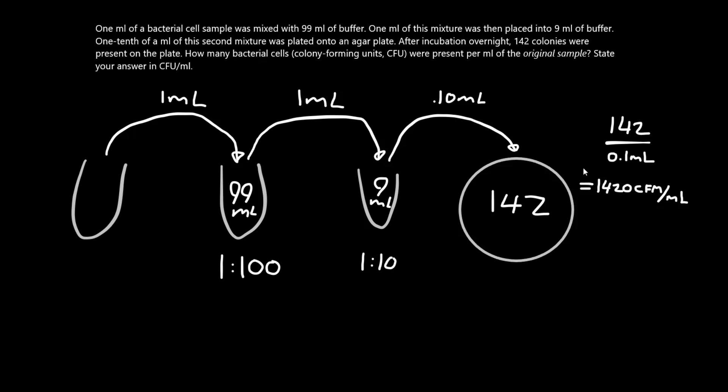These colony forming units per mil correspond to this solution here. And in order to find the original solution, we have to go back to dilution. So we have to undo these dilutions we actually just did. So basically we have to multiply it by these dilution factors to find the original one that's more concentrated in bacterial cells.